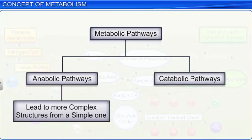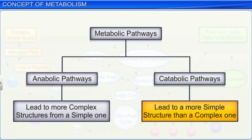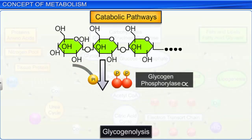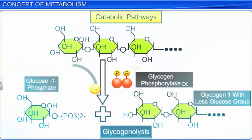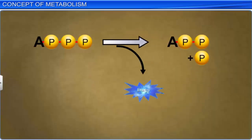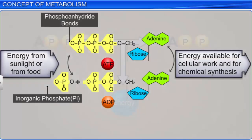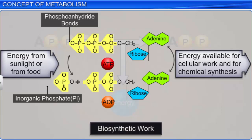On the other hand, catabolic pathways lead to a simple structure from a complex one. They involve degradation and also lead to a release of energy. For example, the process of glycogenolysis, which leads to the breakdown of glycogen to glucose. The energy released during degradation is trapped by living organisms and stored as chemical bonds. This bond energy is later utilized for biosynthetic, osmotic, and mechanical work whenever the need arises.